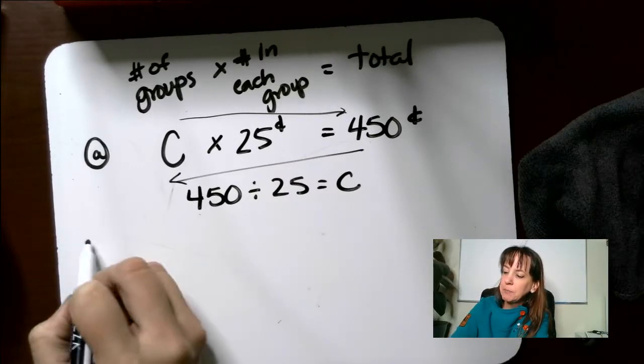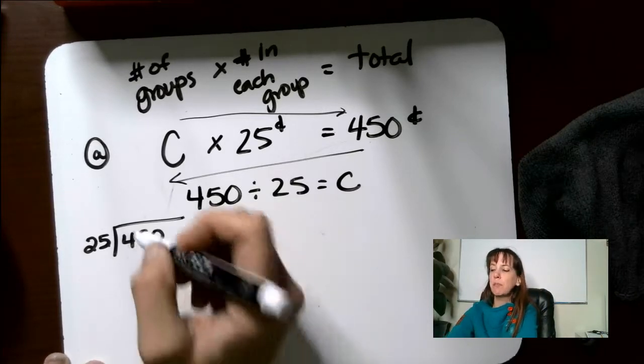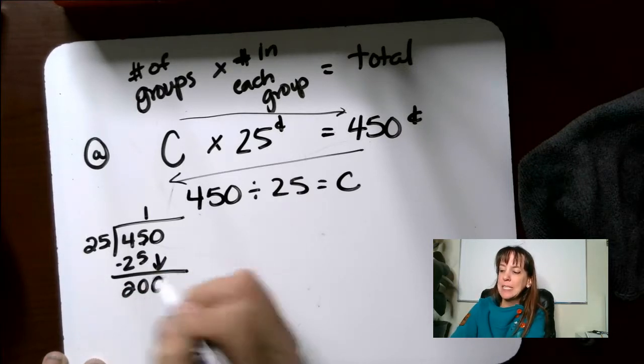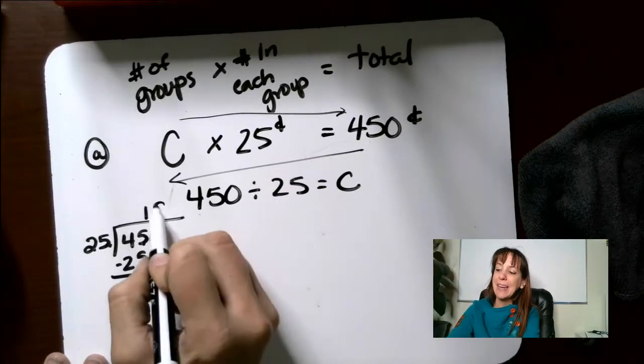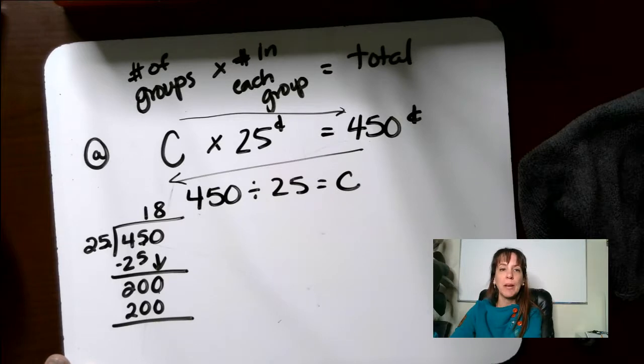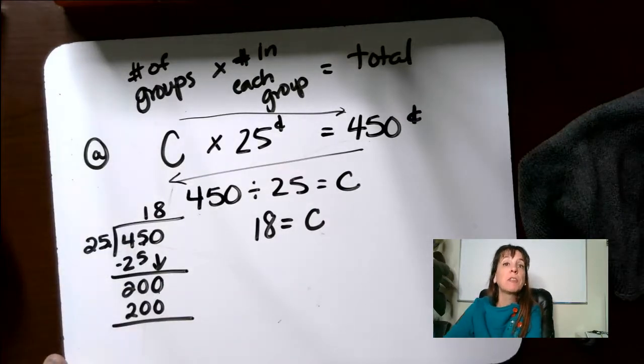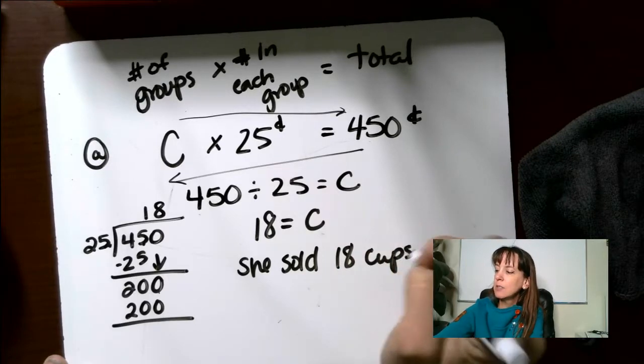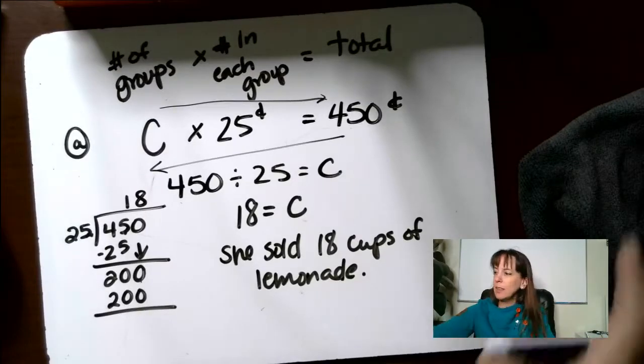We multiply in this direction, which means we divide in that direction. So our problem is going to be 450 divided by 25 equals C. 25 goes into 45 one time. Subtract and we're left with 20. Bring down. Think of it like this: 25 is quarters. How many quarters do you have in $2? You would have eight. So eight times 25 will give us 200 cents with no remainders. So 18 equals C. C equals the number of cups. She sold 18 cups of lemonade.